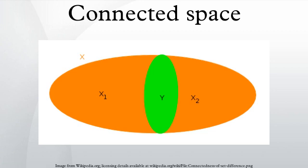The simplest example is the discrete two-point space. On the other hand, a finite set might be connected. For example, the spectrum of a discrete valuation ring consists of two points and is connected — it is an example of a Sierpiński space. The Cantor set is totally disconnected; since the set contains uncountably many points, it has uncountably many components. If a space X is homotopy equivalent to a connected space, then X is itself connected.